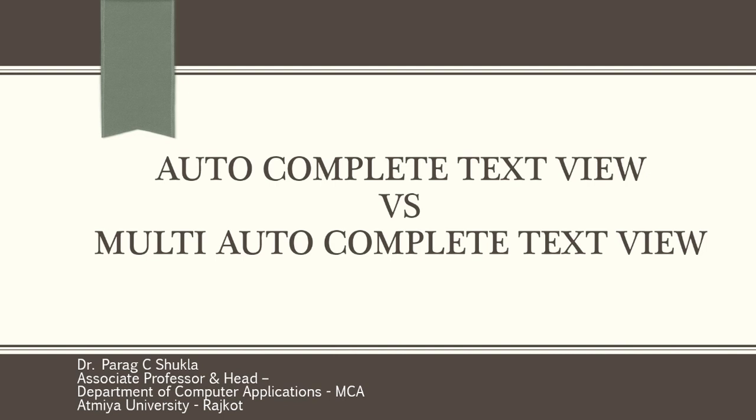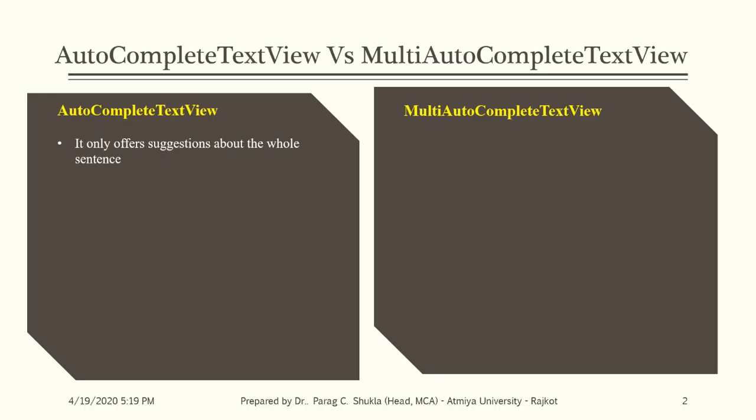Hello, welcome to my channel. Today I will explain the difference between AutoCompleteTextView and MultiAutoCompleteTextView. AutoCompleteTextView offers a suggestion for the whole sentence, while MultiAutoCompleteTextView offers suggestions for every token in the sentence. You can specify what delimiter you want to use between the tokens.